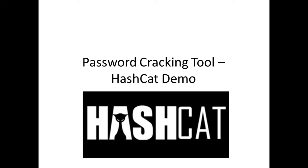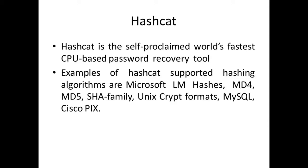This demo is on a tool by name hashcat, which is an offline password cracking tool. In our last session we looked at what is an offline password cracking tool, how it differs from an online tool, what is a brute force attack, and what is a dictionary-based attack. Hashcat is the self-proclaimed world's fastest CPU-based password recovery tool and supports many hashing algorithms like Microsoft LM hashes, MD5, the SHA family, MySQL, and Cisco PIX.